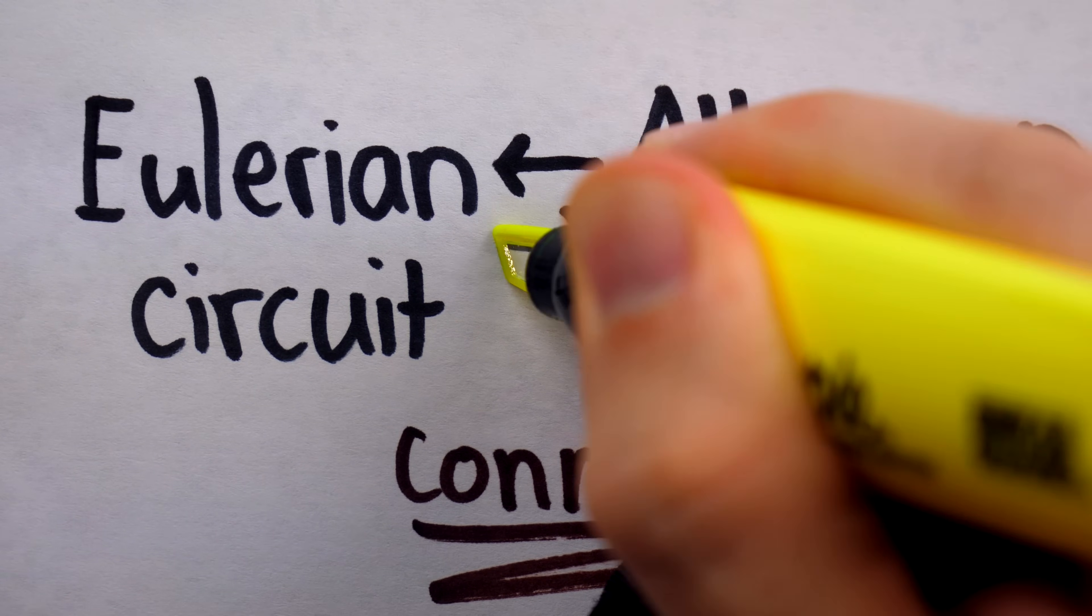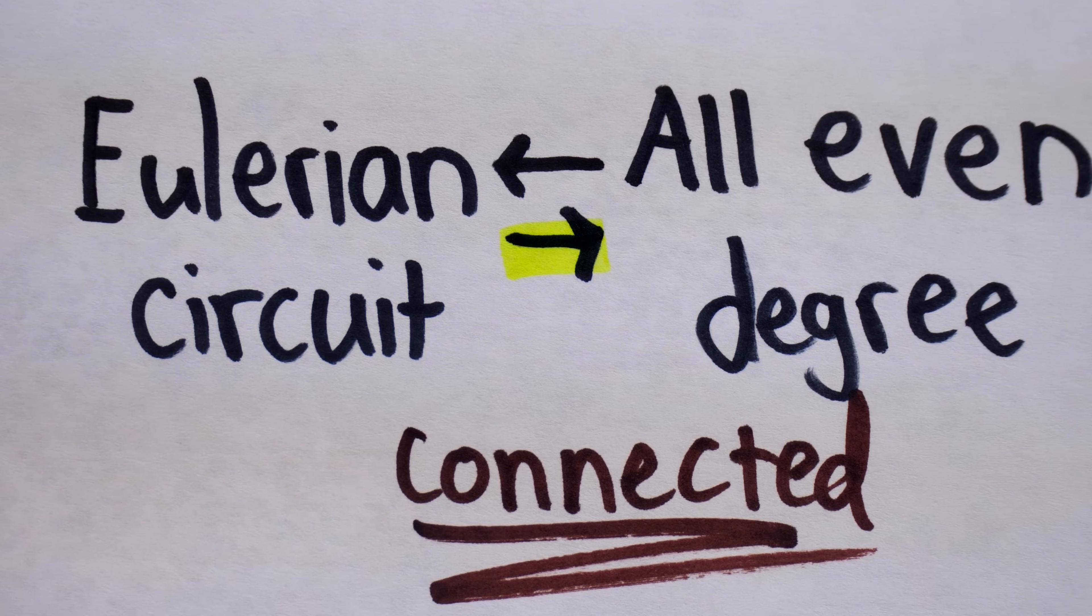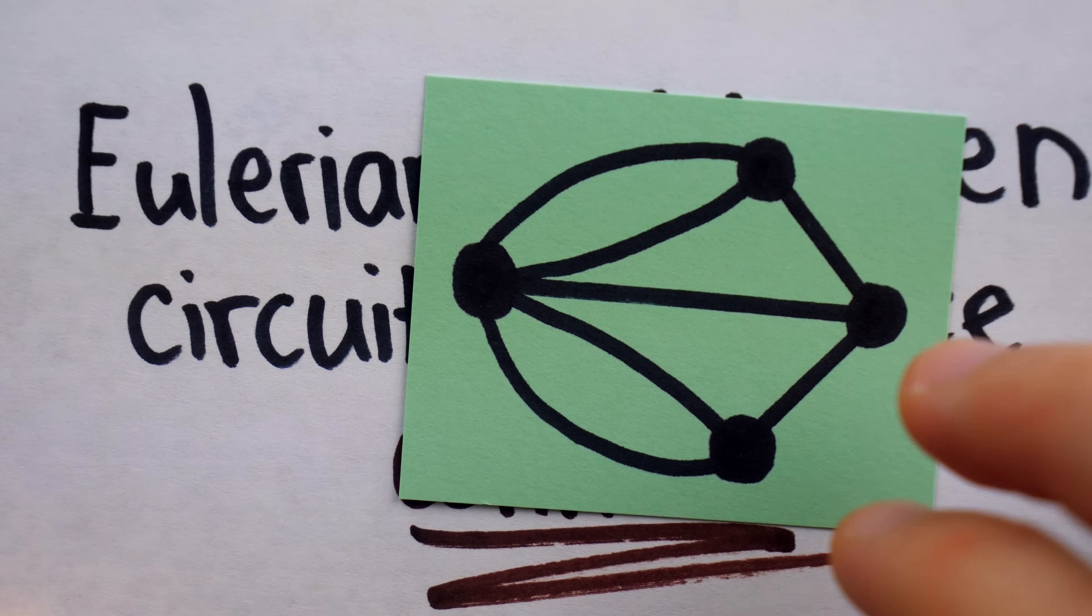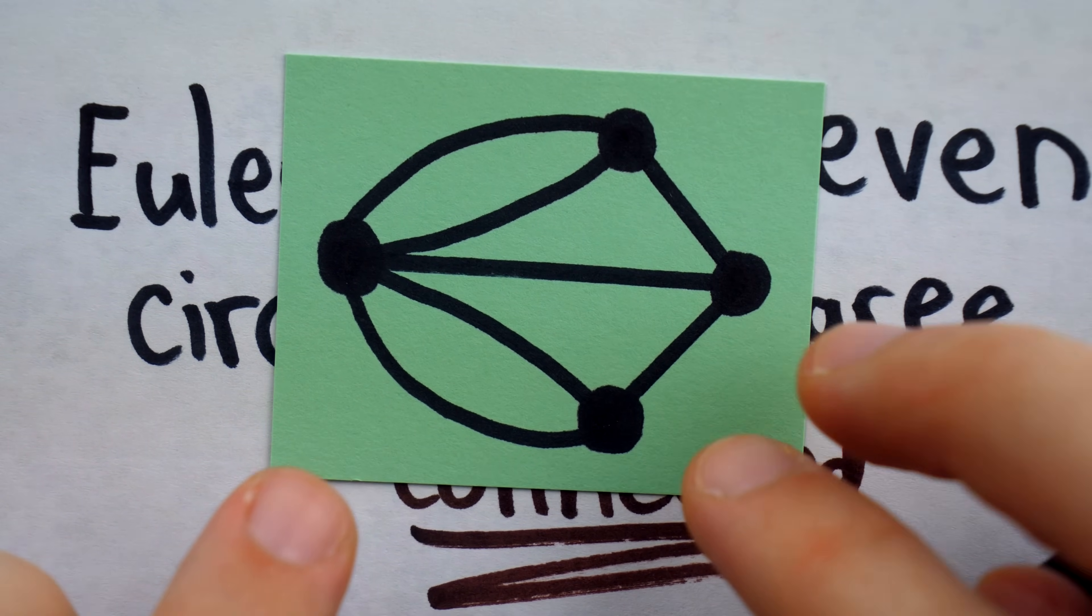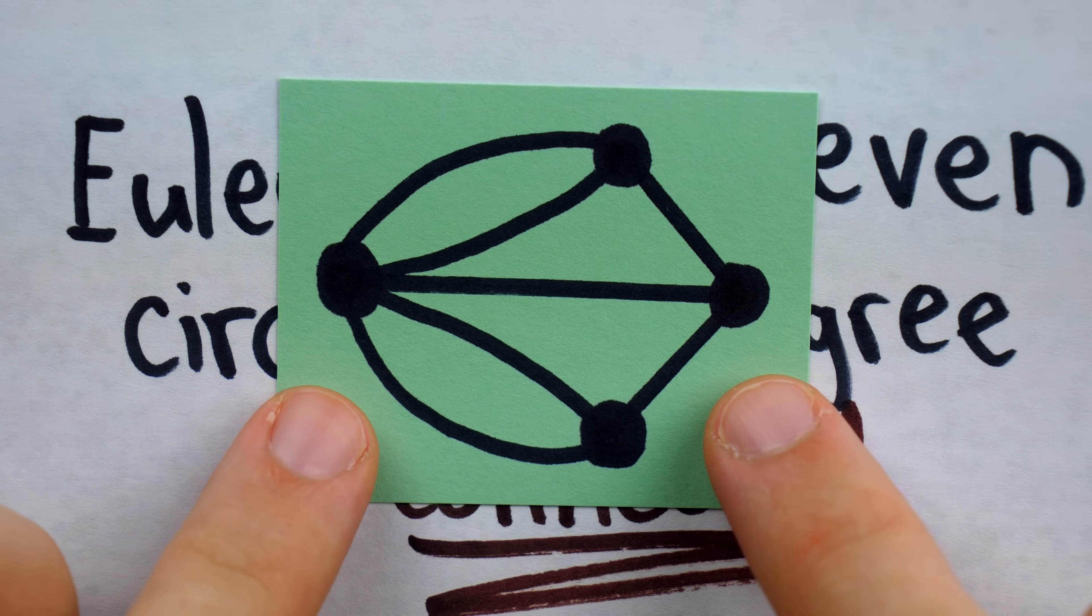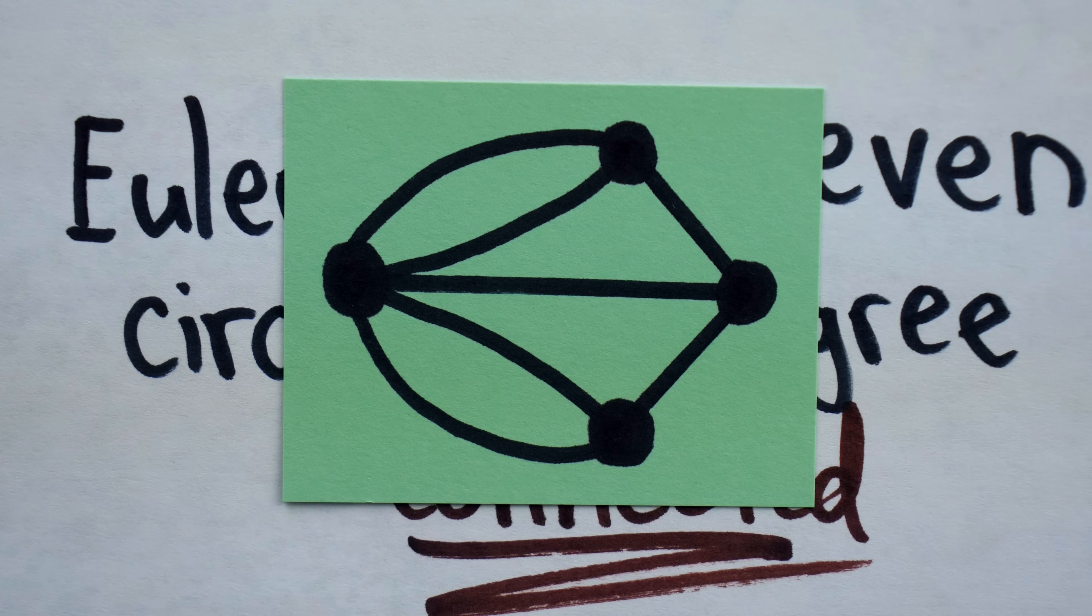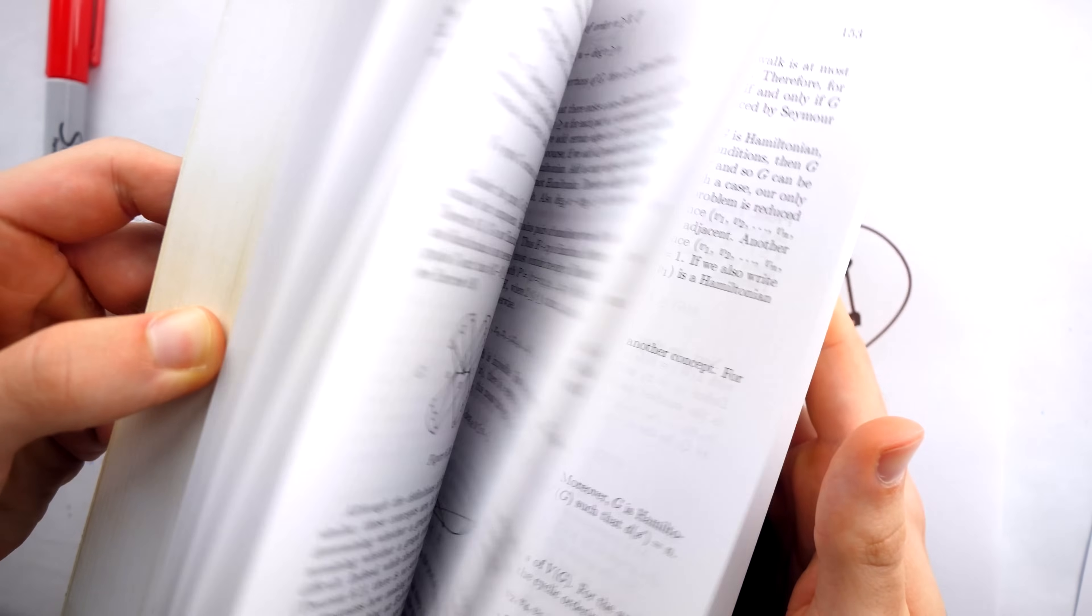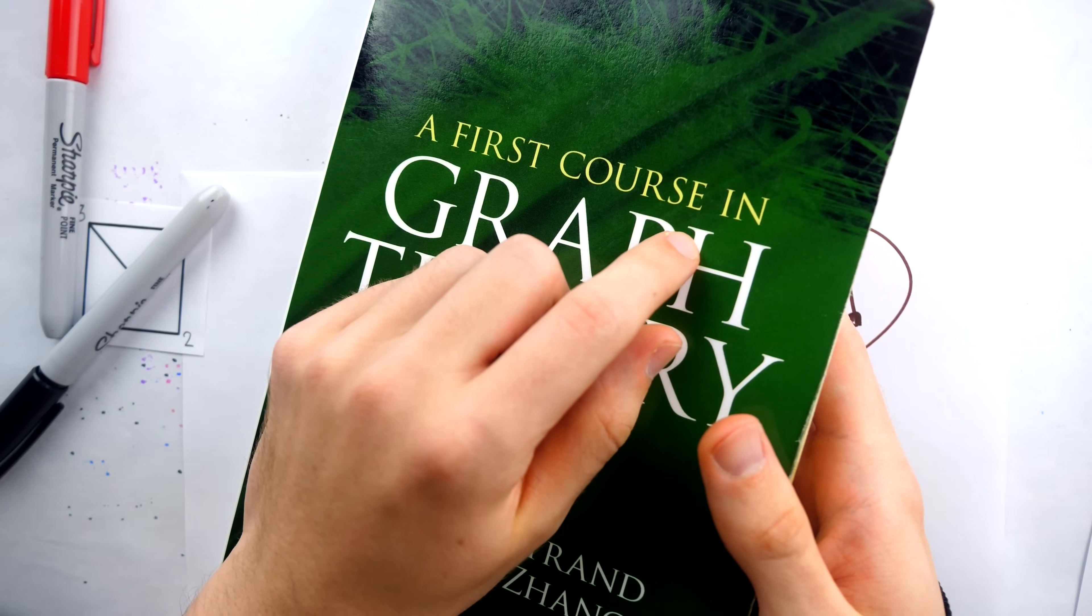So Euler showed the necessity. Over a hundred years later, Carl Hierholzer showed the sufficiency. And this actual graph, which like I said, modeled the city of Konigsberg and its seven bridges, didn't actually appear in print for another two decades. Graph theory wasn't really a thing in Euler's time. So this whole ordeal was quite slow moving.